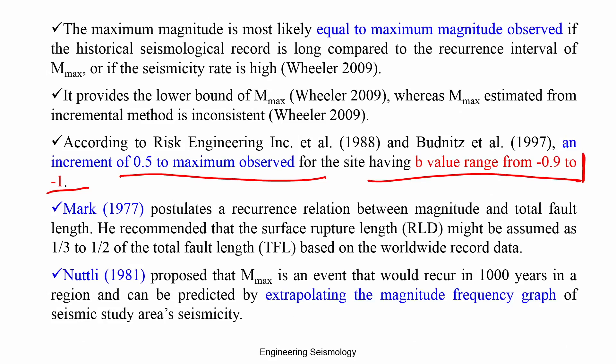Mark proposed that if you know the length of the fault, you assume one-third to two-thirds of the length will rupture. For example, if I have a 100-kilometer fault, I assume 30 to 50 kilometers will rupture. Since I know the subsurface rupture length, I can use an empirical equation to get Mmax. This is called the Mark method.